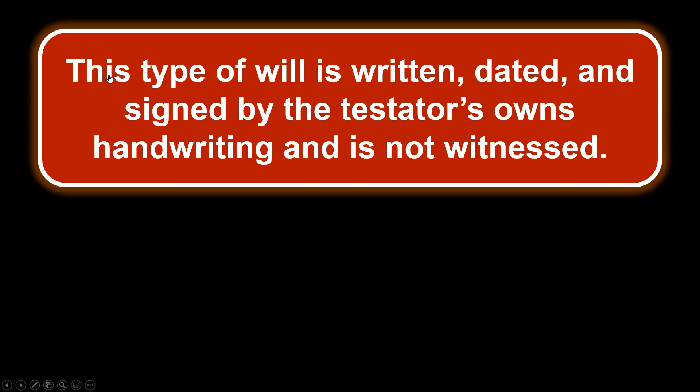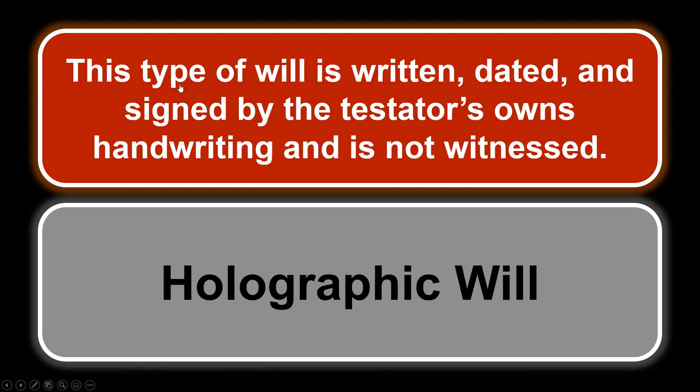This type of will is written, dated, and signed by the testator's own handwriting and is not witnessed. So if it's not witnessed, we know it's not a witnessed will. If it's in their own handwriting, the thing that should come to mind is a holographic will. So this is one that's not witnessed and in the testator's own handwriting — the person actually devising the property. Holographic will.